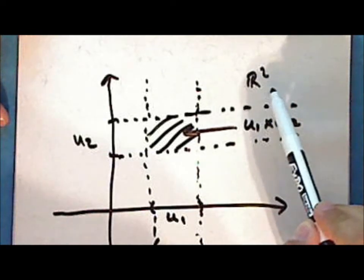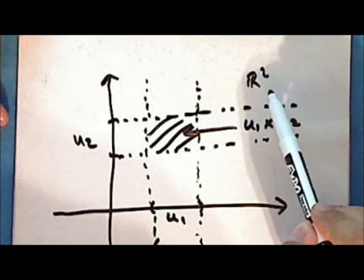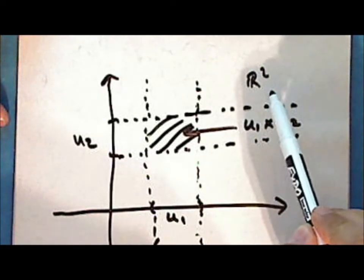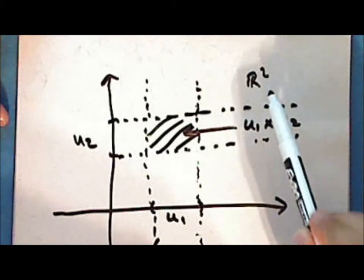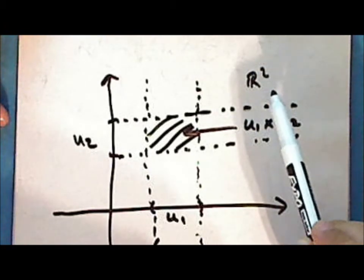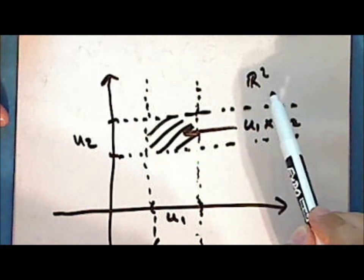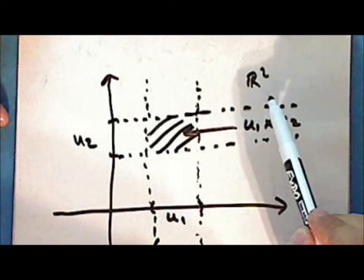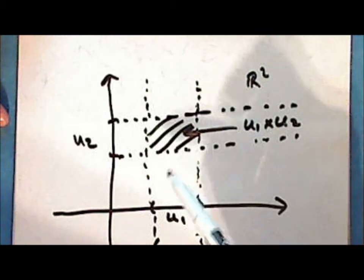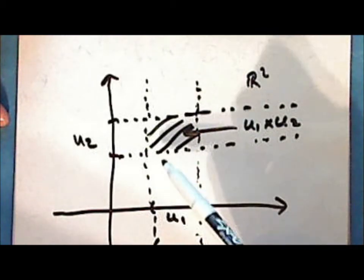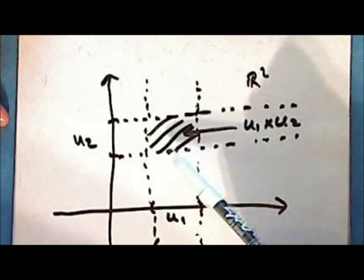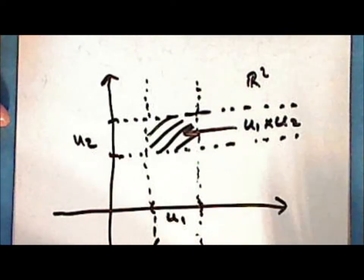The standard topology on R-squared is the product topology on R-squared, where R is the real line — that is, the set of reals with the order topology. When R-squared has the product topology, it is called the real plane, and the basic open sets in the real plane are called open rectangles.